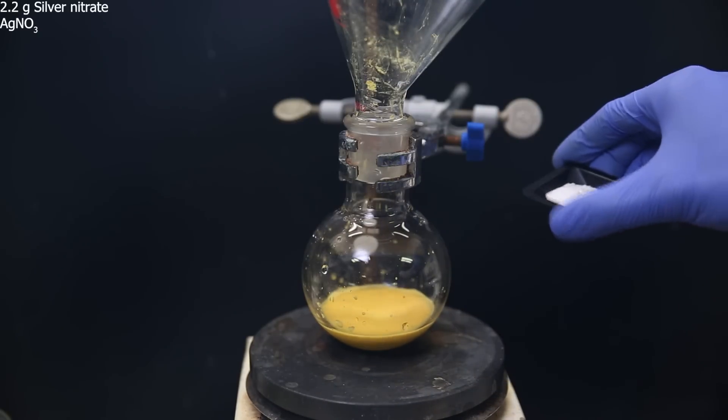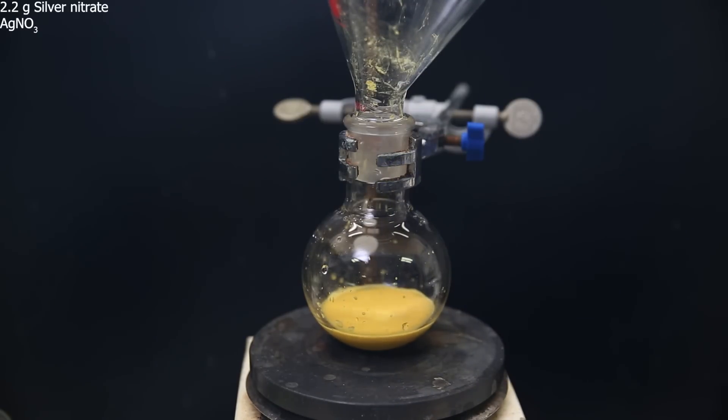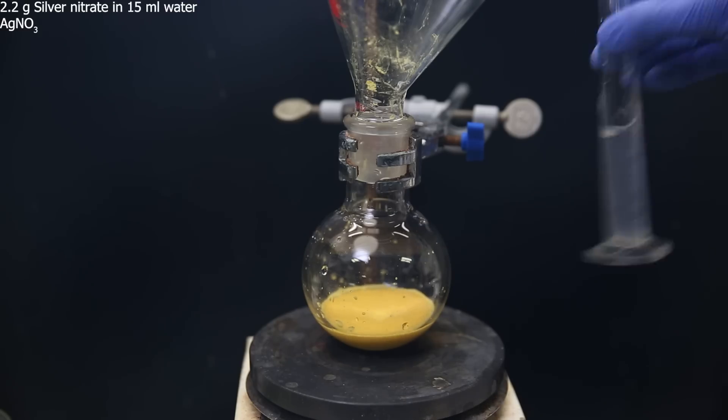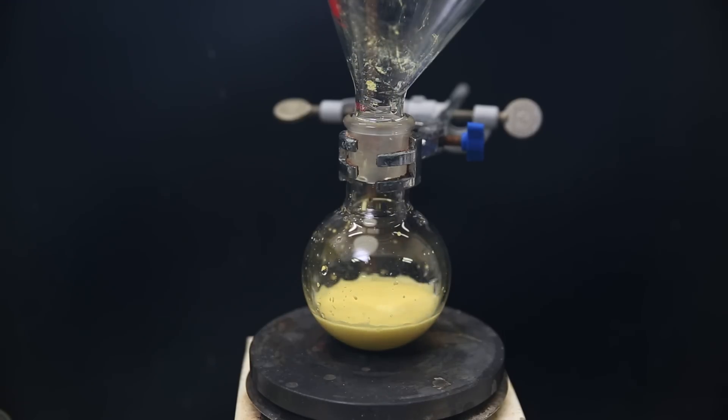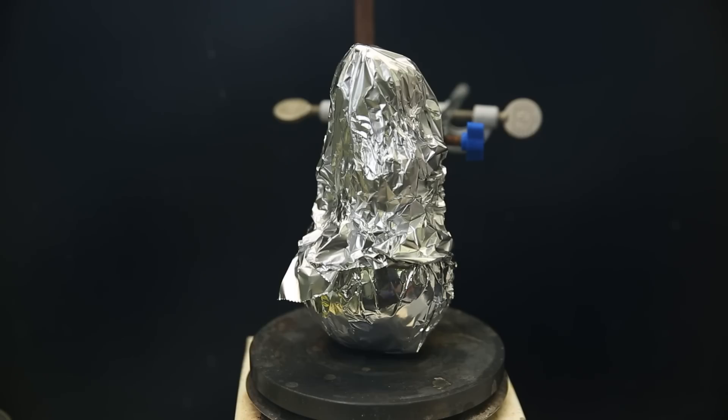Now for the next reaction, I have weighed out 2.2 grams of silver nitrate as the oxidizer and dissolved that in 15 mils of water. I add all of it to the flask, and it immediately turns yellow. I then stopper the flask and cover it in aluminum foil to protect it against light, because the silver nitrate is sensitive to light. I then leave it to stir overnight.